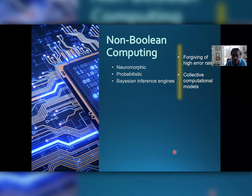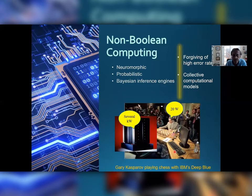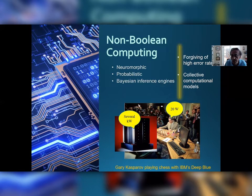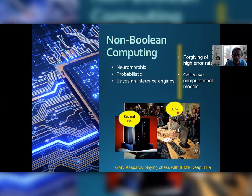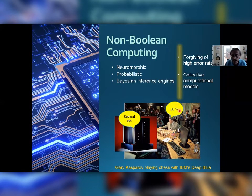This is a picture of Garry Kasparov playing chess with IBM's Deep Blue computer — Garry lost, barely. But his brain dissipated 20 watts of energy, whereas Deep Blue dissipated several kilowatts. So the human brain is extremely energy efficient, far more so than any digital computer. And in some tasks like face recognition, the human brain is far superior to even the best digital computer. So neuromorphic computing would be one playground for StrainTronics.